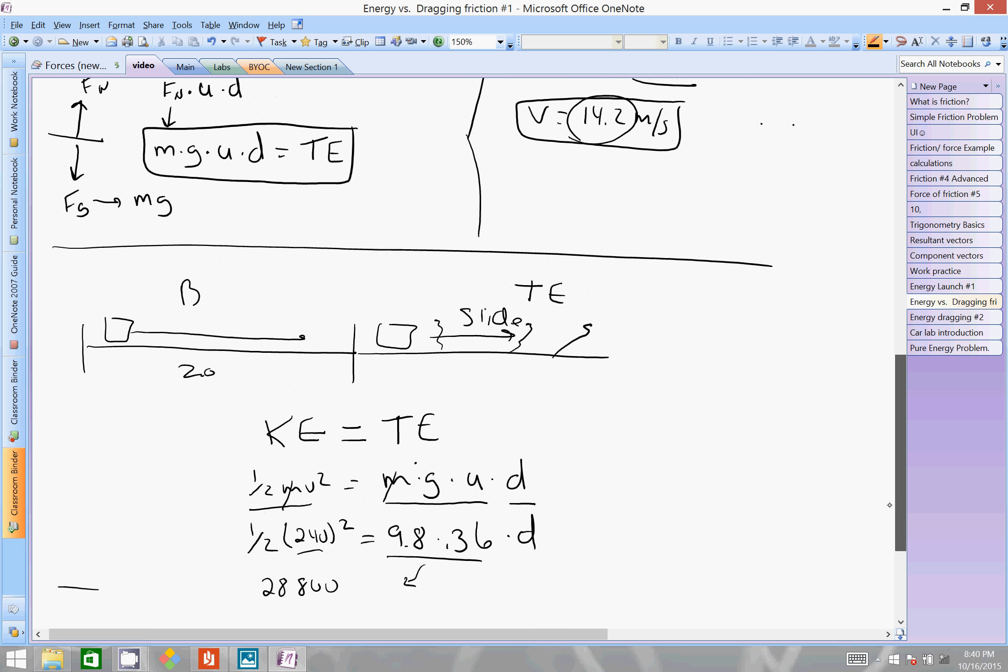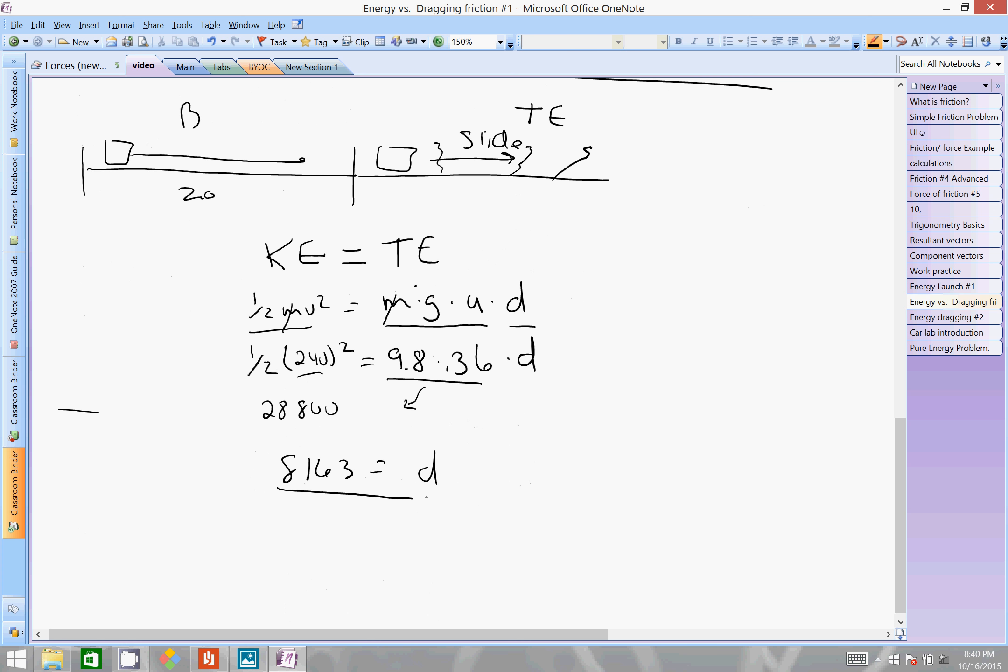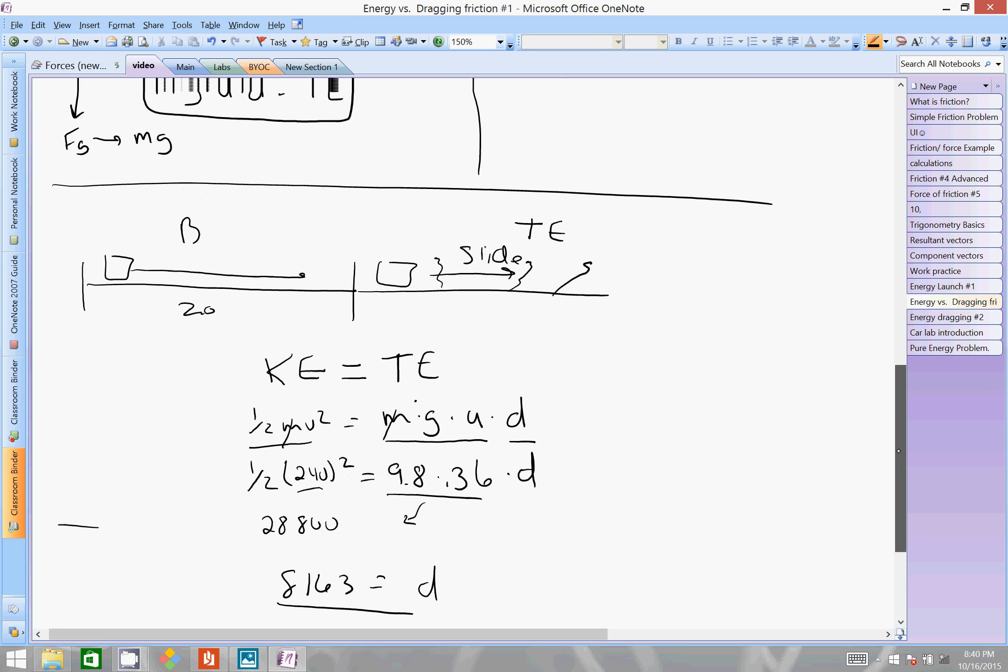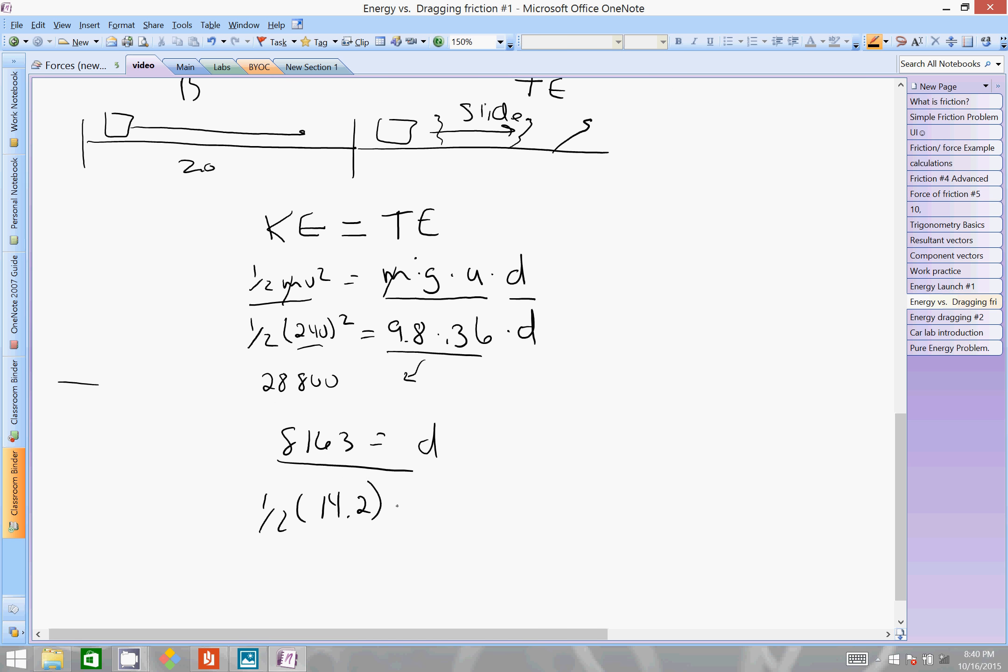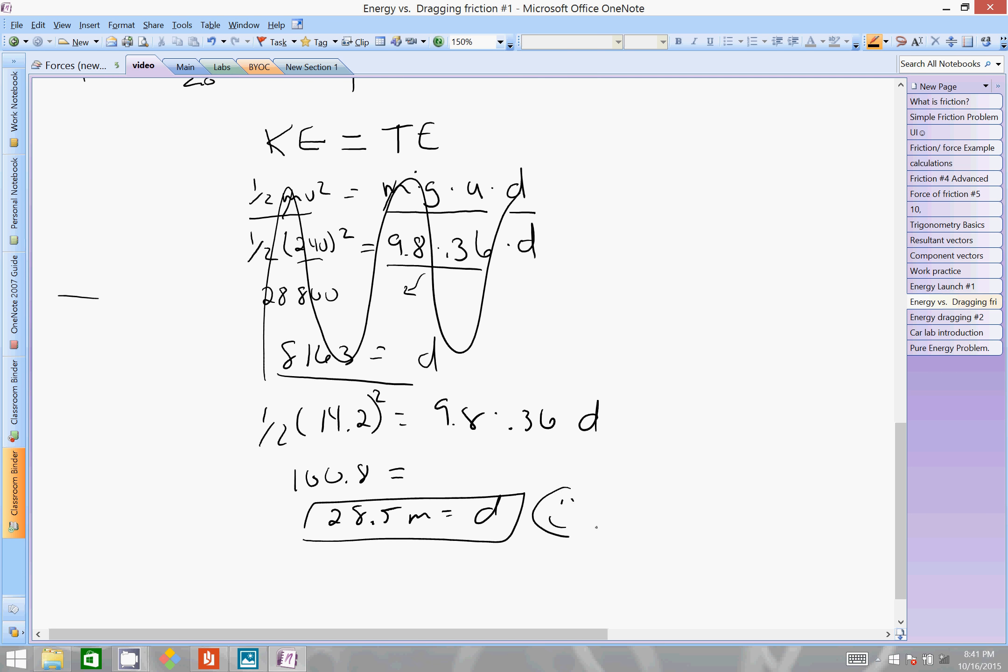If it was traveling 240 meters per second, it would go a long ways. Let's just sub in our correct value. So, we've got 1 half, 14.2 squared, that value equals 9.8 times 0.36 times distance. Whenever you do a problem, does it make sense? That's important. 14.2 squared this thing equals 201 times 0.5 equals 100.8. And then divide by 9.8, divide by 0.36 equals, in this case, 28.5 meters equals the distance. And, at this point, we're quite a bit happy with this problem.